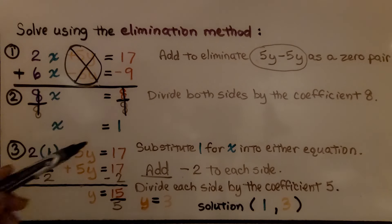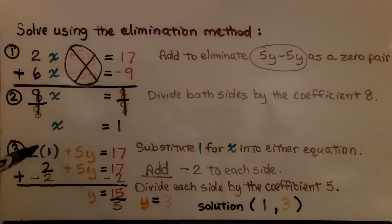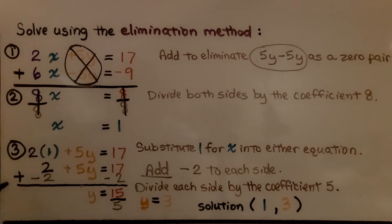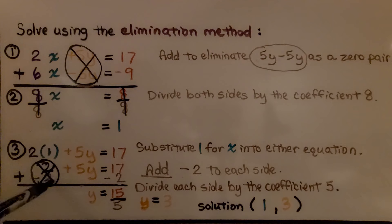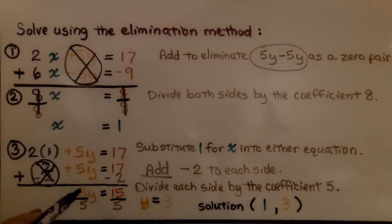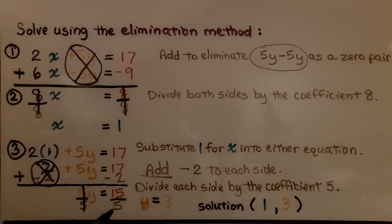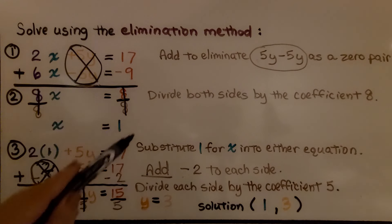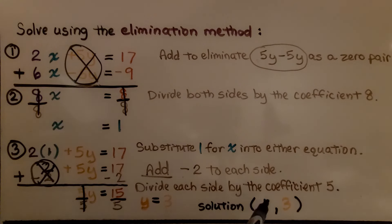Third, we substitute x equals one into either equation. So we have two plus five y equals 17. Using the addition property of equality, we add a negative two to each side, creating a zero pair and eliminating it. 17 plus negative two is 15, so five y equals 15. Dividing both sides by five, we get y equals three. Our solution is x equals one, y equals three, written as the ordered pair (1, 3).